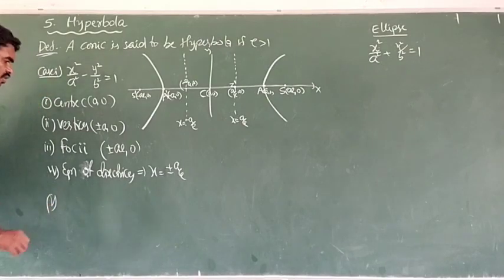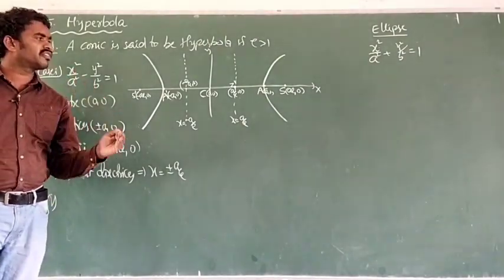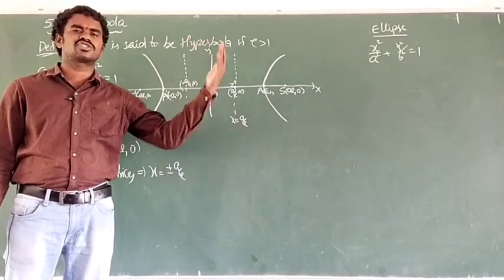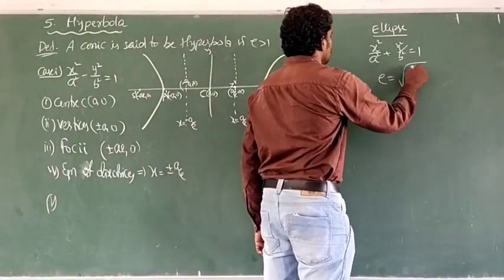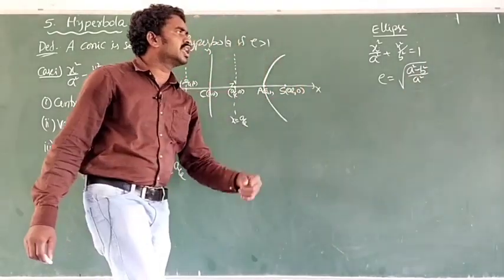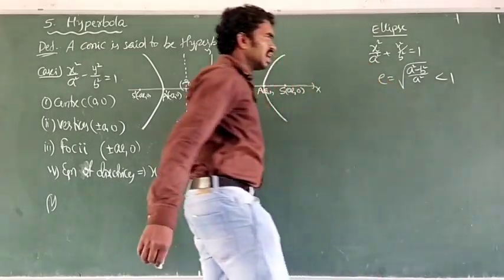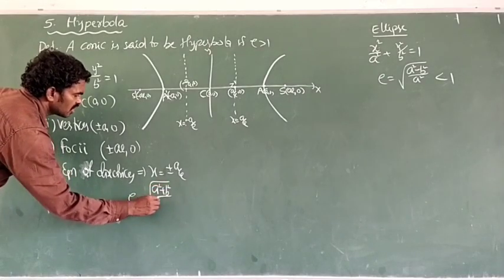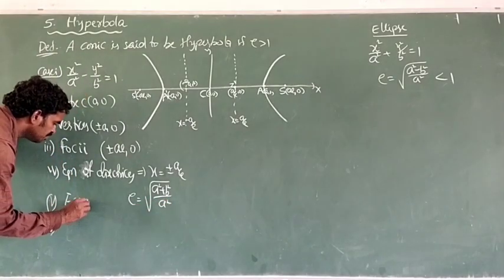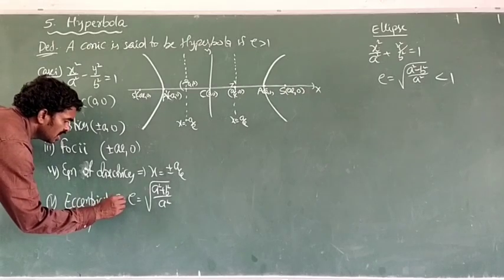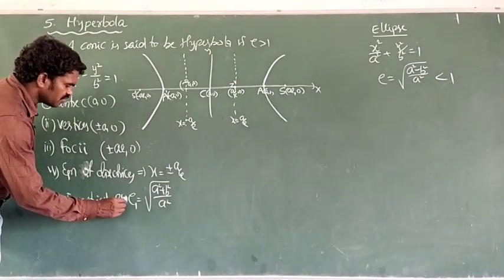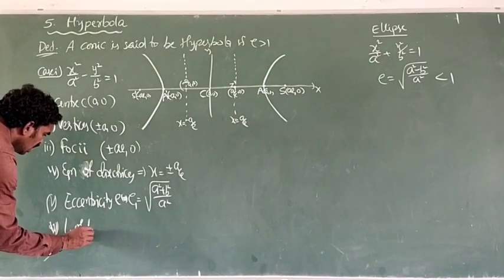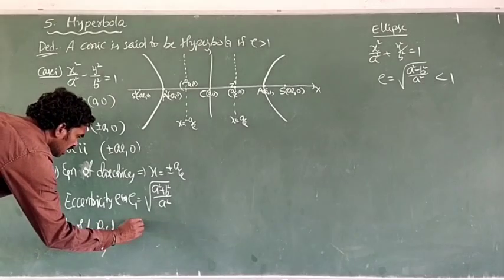The eccentricity of a hyperbola is different from an ellipse. In ellipse, eccentricity is less than 1, with the formula √((a²-b²)/a²). In hyperbola, E value is greater than 1, so to get E > 1, the formula becomes √((a²+b²)/a²) — the numerator is a plus. Eccentricity is denoted by E or E1.